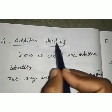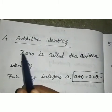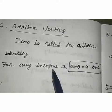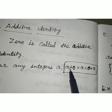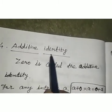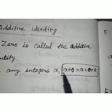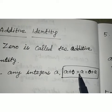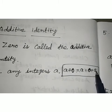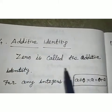The fourth property is additive identity. Zero is called the additive identity. For any integer a: a plus 0 equals a, or 0 plus a equals a. Identity means when we add any number with 0, we get the same number. So 0 is called the additive identity.